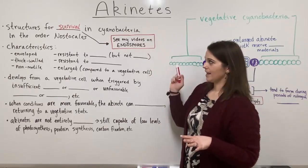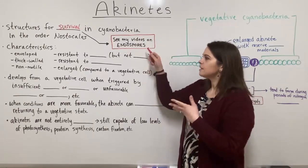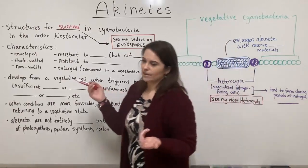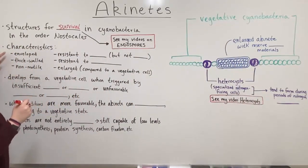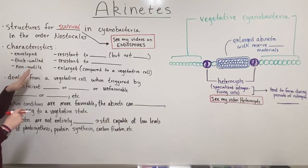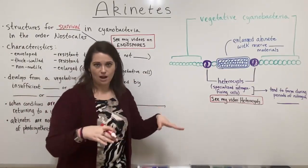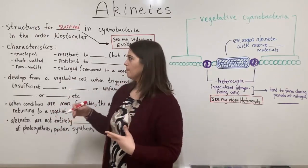Now let's get back to talking about akinetes. Their characteristics are going to be similar to those of endospores, but not exactly the same. Akinetes are enveloped, they are thick-walled, and they are non-motile. You're not going to see little flagella popping out and akinetes swimming around — they don't move.